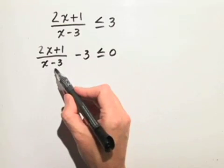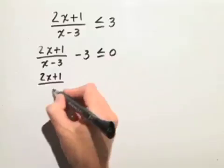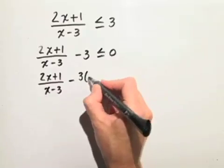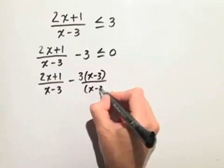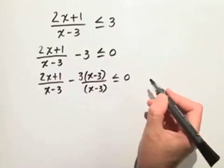Next, we need to get a common denominator of x minus 3. So we have 2x plus 1 over x minus 3 minus 3, and we'll multiply the numerator and denominator by x minus 3 to get a common denominator, is less than or equal to 0.